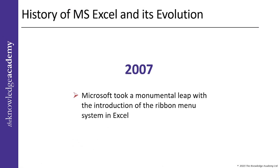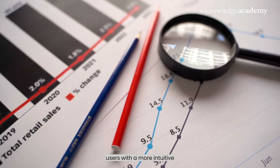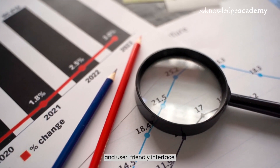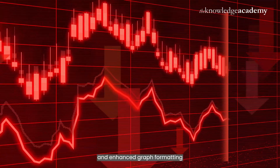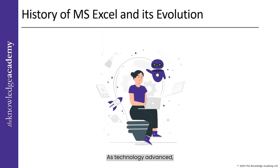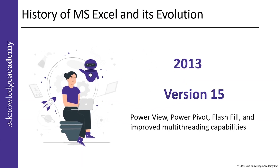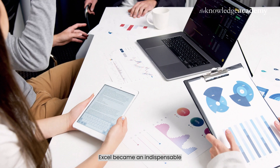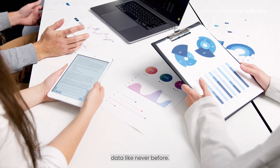Fast forward to 2007, Microsoft took a monumental leap with the introduction of a ribbon menu system in Excel. This groundbreaking change provided users with a more intuitive and user-friendly interface. Alongside that, improvements like smart app diagrams and enhanced graph formatting made data visualization a breeze. As technology advanced, so did Excel. In 2013, version 15 introduced PowerView, PowerPivot, FlashFill, and improved multi-threading capabilities, making Excel an indispensable tool for businesses and professionals.